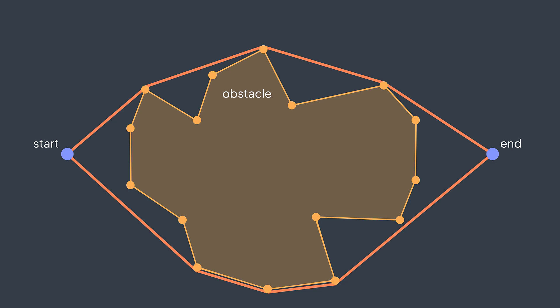After getting the convex hull, we split it into two paths, the clockwise path between start and end and the counterclockwise one.